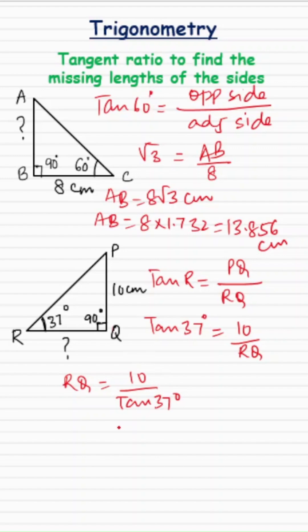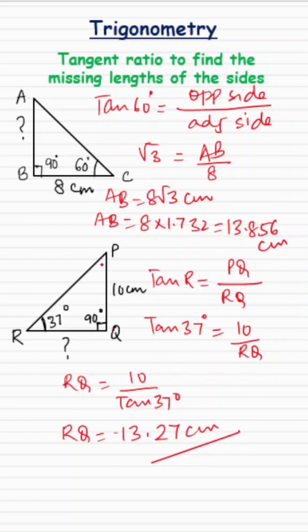If you divide 10 by tan 37° on a scientific calculator, RQ comes out to be approximately 13.27 centimeters. That's how we use the tangent ratio to find the missing lengths. Bye, see you in the next one!